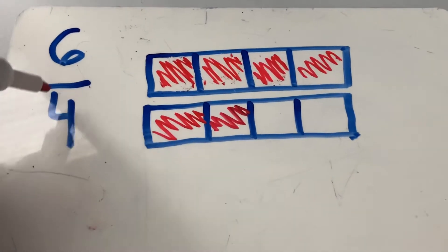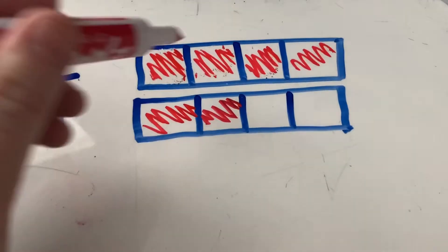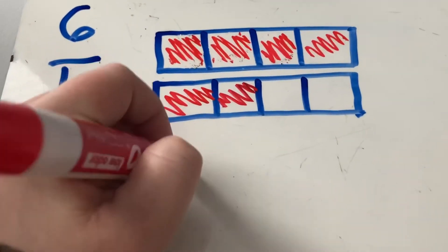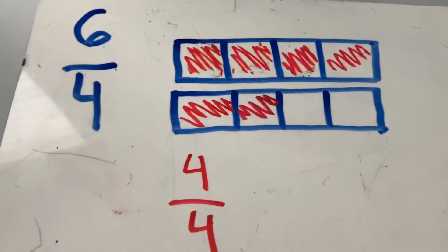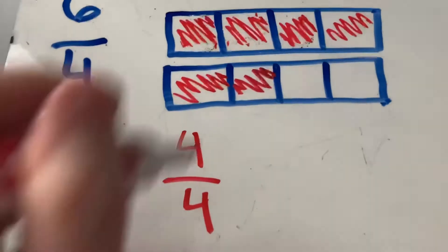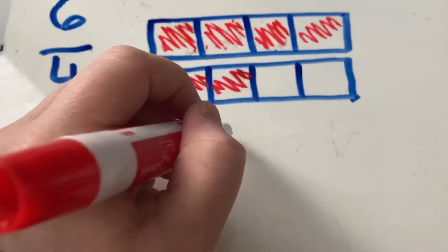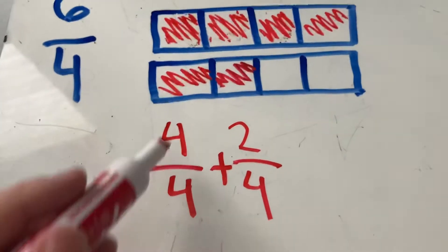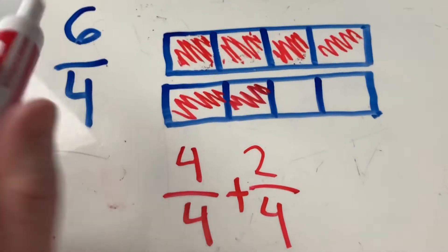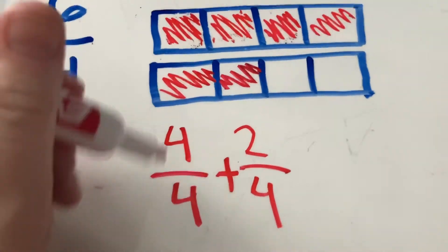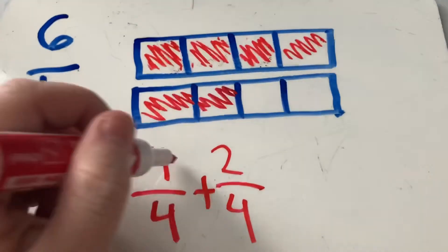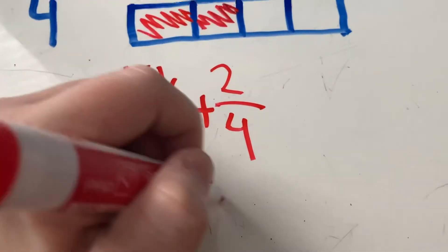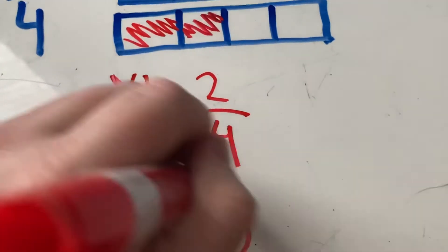I can also decompose six-fourths to represent our model. The top bar model shows four over four. Four over four is equal to one whole. And then I added another two-fourths. When I add four-fourths plus two-fourths, I get six-fourths. And we know that four-fourths is the same as one whole. So our fraction now is one and two-fourths.